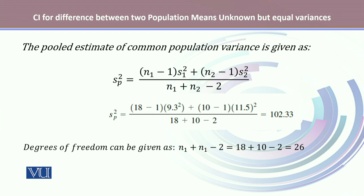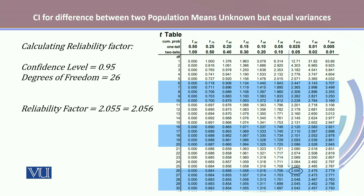The degrees of freedom for this test is n₁ plus n₂ minus 2, which is 18 plus 10 minus 2, equaling 26. To calculate the reliability factor, we have a confidence level of 0.95, with degrees of freedom equal to 26. Using the Student's t-distribution table at t₀.₉₇₅ with 26 degrees of freedom, the value is 2.056, which we use as the reliability coefficient in the confidence interval expression.